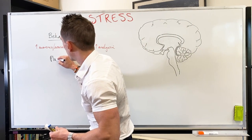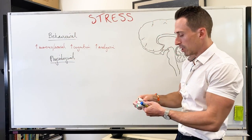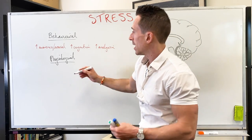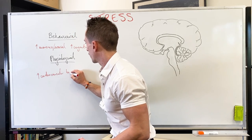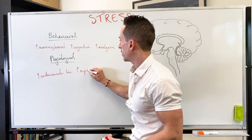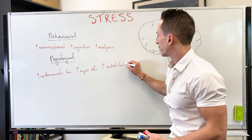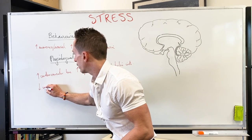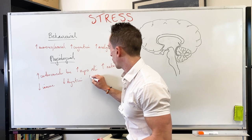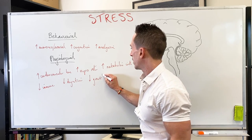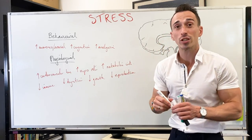Let's look at the physiological responses. The physiological responses are broad and multi-organ system covering. Cortisol increases cardiovascular tone, increases respiratory rate, and increases metabolic intermediates. But it also decreases immune function, decreases digestion, decreases growth signals, and decreases reproduction — or at least the need and desire for reproduction.